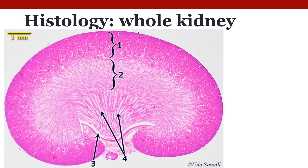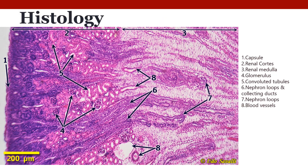The last couple of slides cover histology. The first slide shows an entire kidney, allowing you to see the anatomy — the renal cortex is the dark pink area, and the renal medulla is the lighter area on the inside. Zooming in on the cortex and part of the medulla, you can make out the glomeruli pointed to by the number four arrows, the convoluted tubules indicated by the number five arrows, and the ends of the nephron loops visible in the medulla area near the number seven.